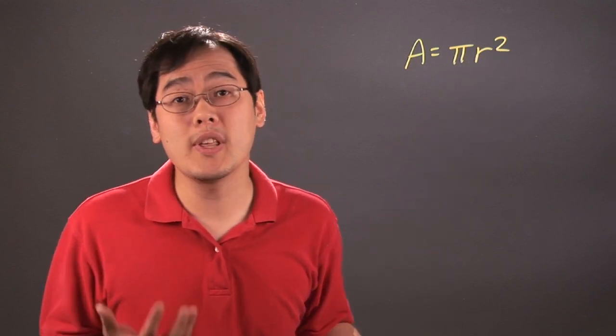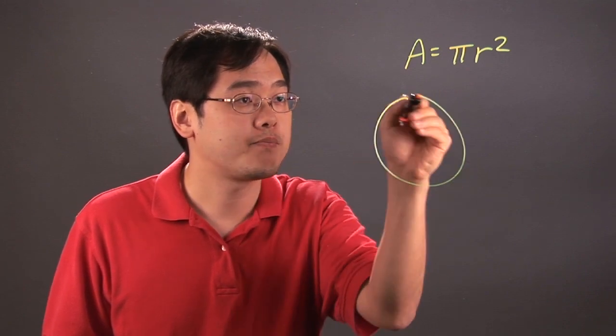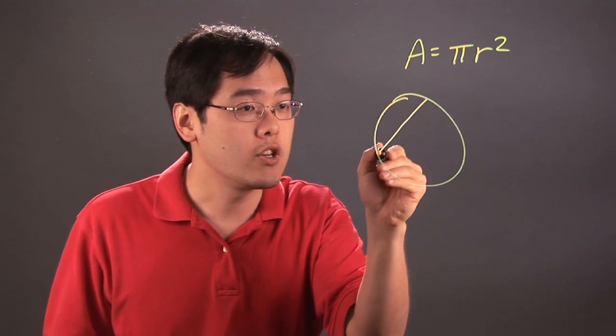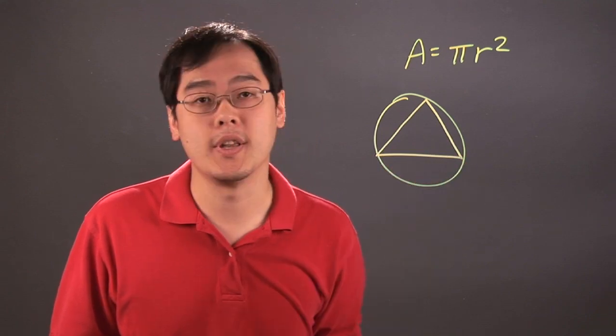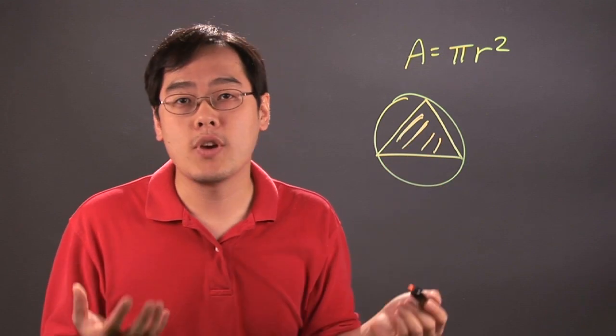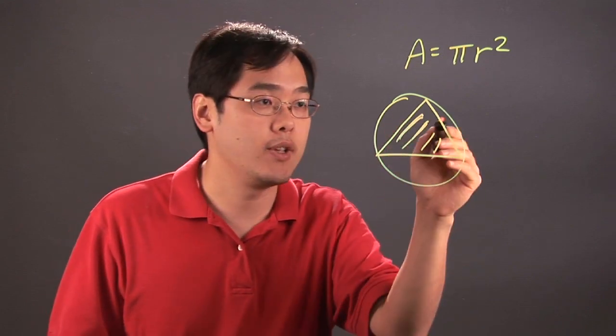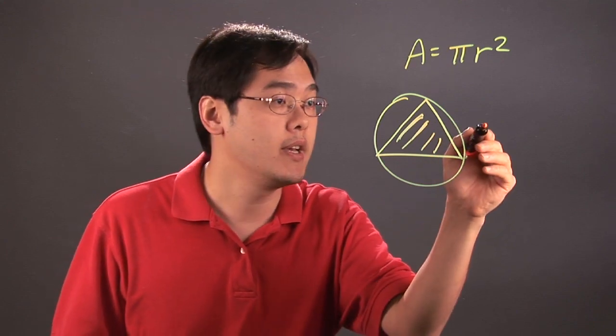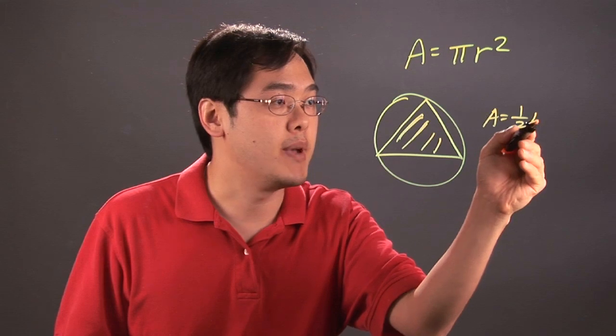So where it goes from there really depends on what the shaded region happens to be. For example, if you have a triangle embedded within a circle and it's shaded, then what you have to think about is it's the area of the circle minus the area of the triangle. Now you have to think about the area of a triangle formula, and the area of a triangle is area equals one-half base times height.